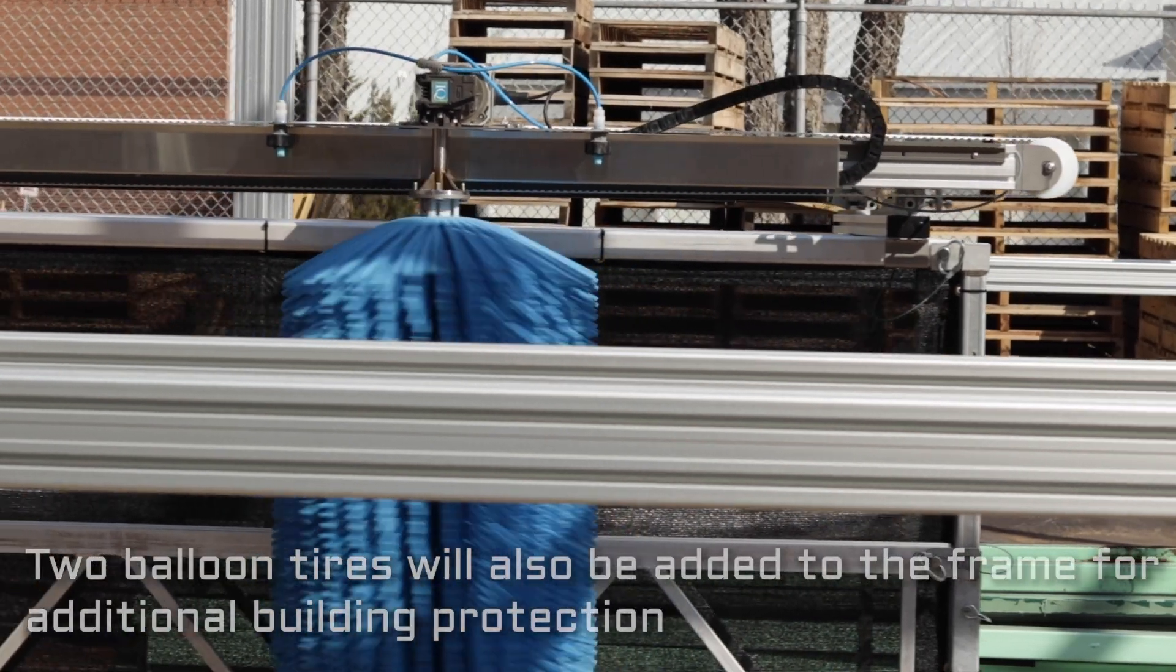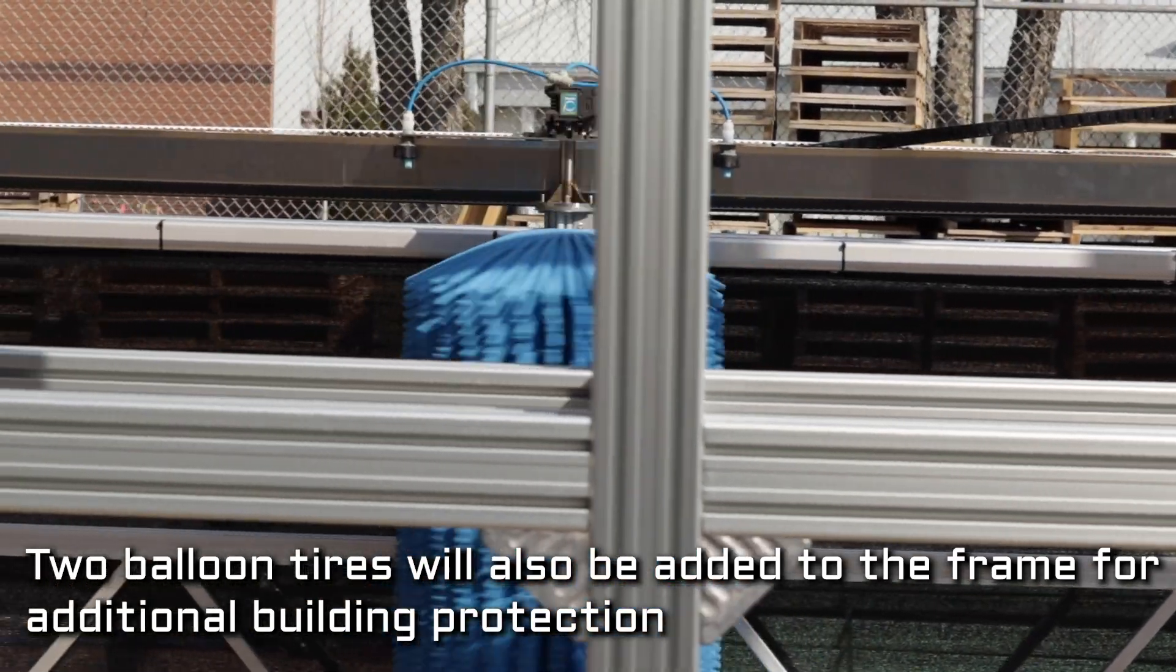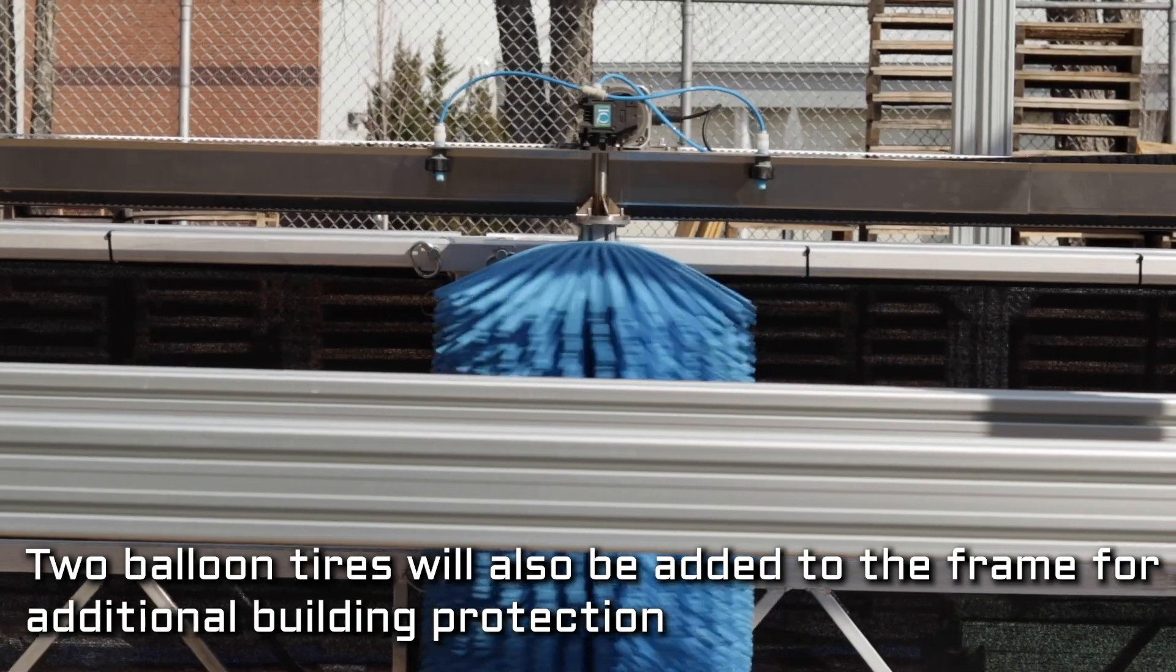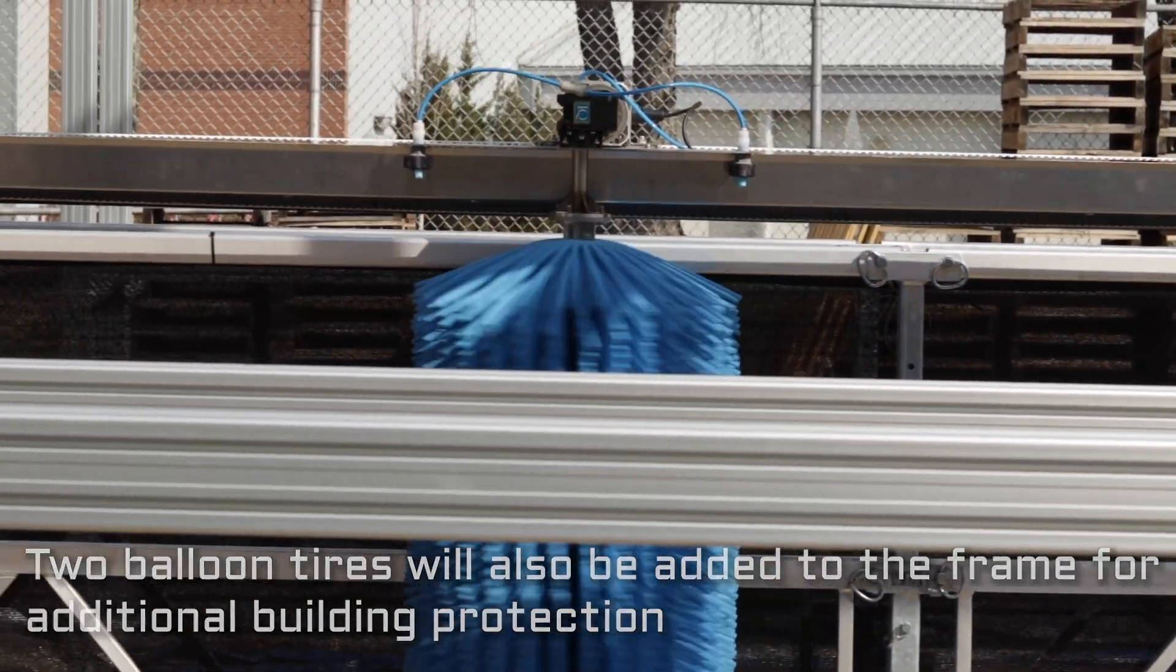Our framing adds less than 200 pounds of overall weight. This allows existing scaffolding the opportunity to transform into a cutting-edge, automated washing machine.